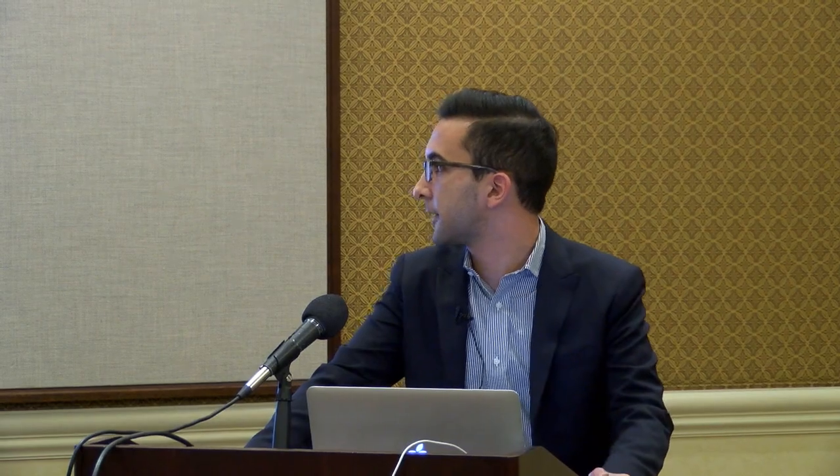Today I want to talk about four or five things: our principles when doing advocacy work at the UN, our mission and vision statement; our approach and advocacy, a conceptual understanding of what we're trying to do at the UN; an overview of select programs and activities we've done at the UN; and a frank assessment of the impact of all of this, which I know many people have asked about.